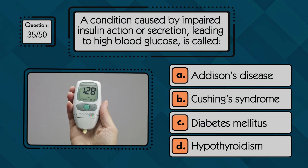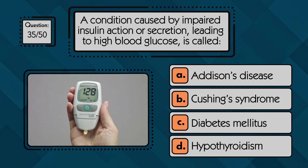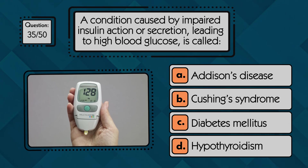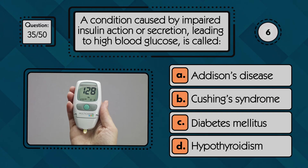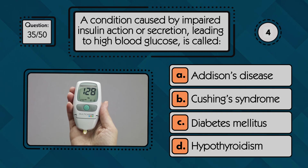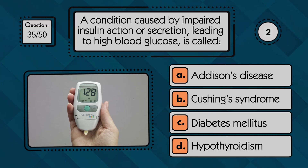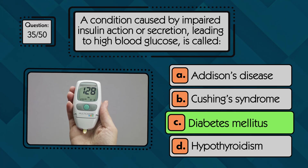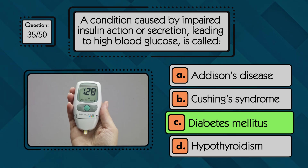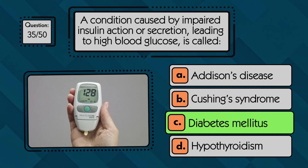A condition caused by impaired insulin action or secretion leading to high blood glucose is called… This condition is called diabetes mellitus, which develops when insulin can't properly regulate blood glucose levels.